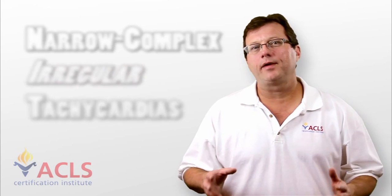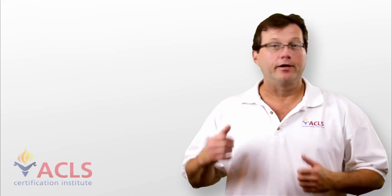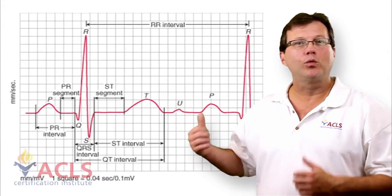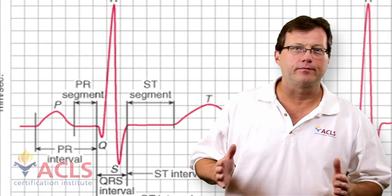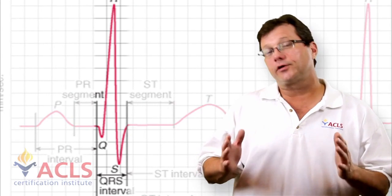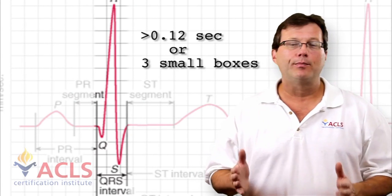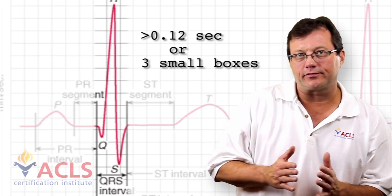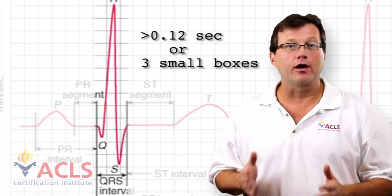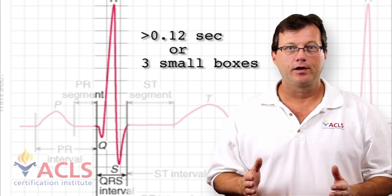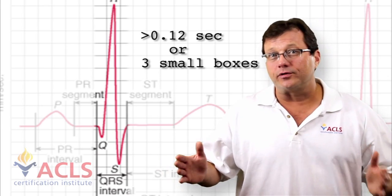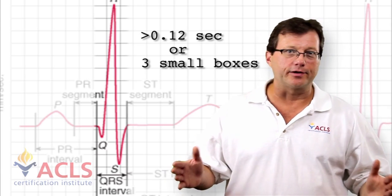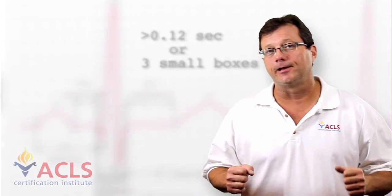Quick review: what makes a narrow-complex tachycardia a narrow-complex tachycardia? We're looking at the width of the QRS complex. The width of the QRS should be less than 0.12 seconds. If it's 0.12 seconds or less, it's considered a narrow-complex tachycardia. If the QRS is wider than 0.12 seconds, that's a wide-complex tachycardia, and we'll cover that a little later.